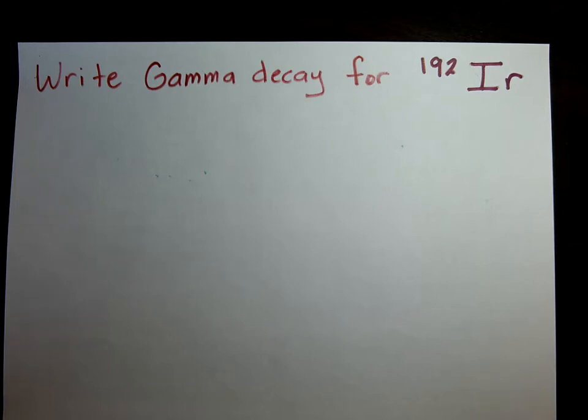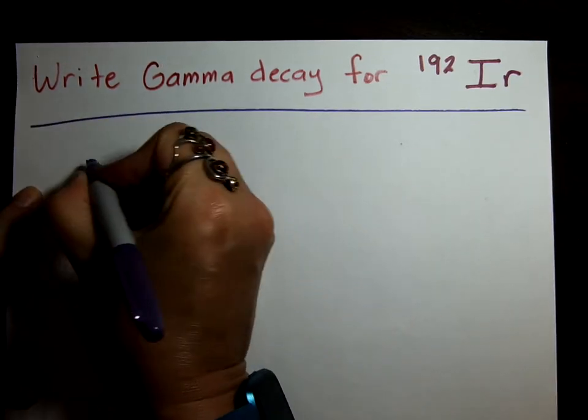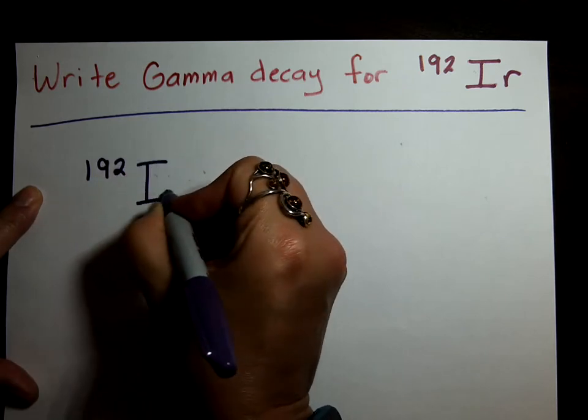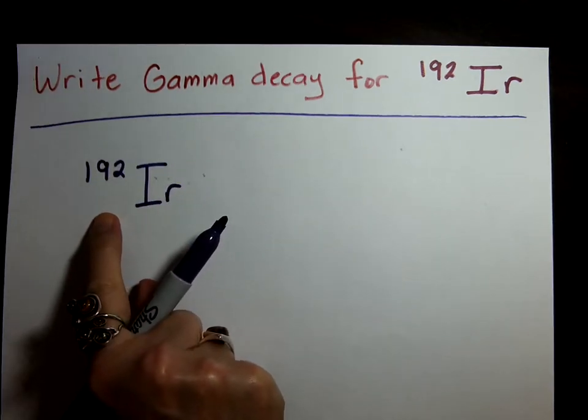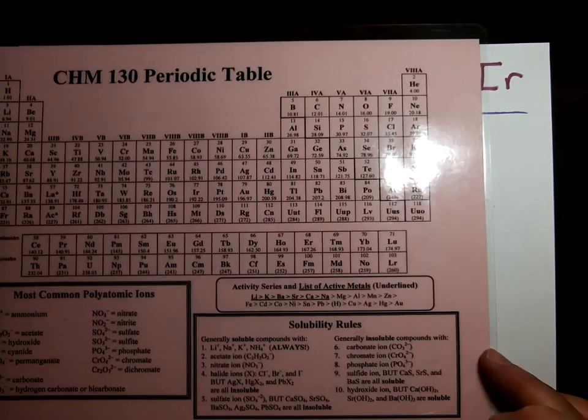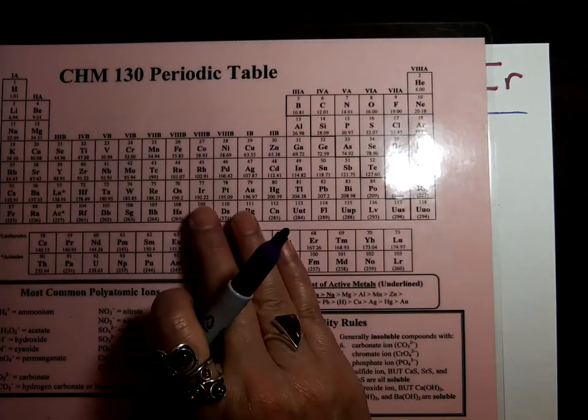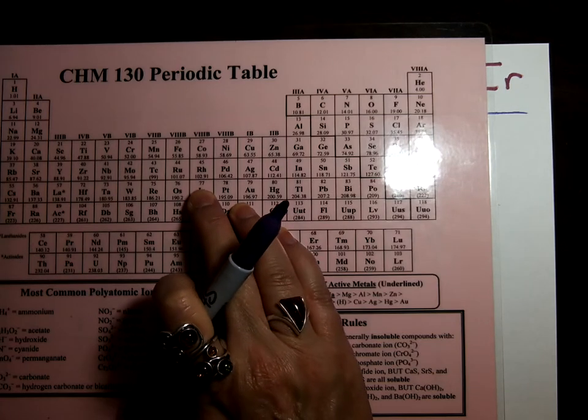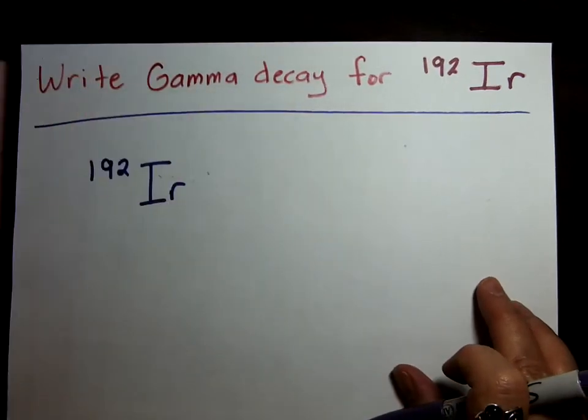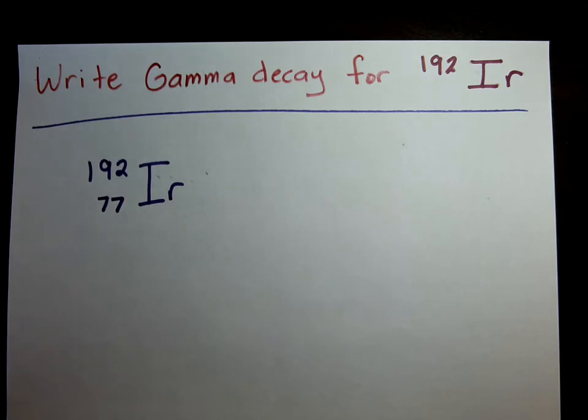So let's write the gamma decay or emission reaction for 192 IR. That's iridium. All right. So 192 IR. Now we need the bottom number for IR, which is the proton number. Where do we find the proton number? Yeah, it's from the table. So we need to look and find IR. Where is IR? There it is. So IR is number 77. 77 protons. Perfect. Okay, so that's my parent atom. 192 over 77 IR.